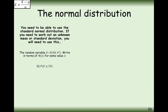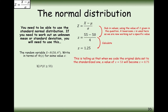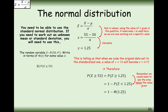Let's have a go at another one. The random variable x has a mean of 50 and standard deviation of 4. Write in terms of phi of z for some value of z the probability of x being bigger than 55. The x value we're working with is 55, so you put 55 in where x is. The mean is 50, standard deviation is 4, so you work out that your z value is 1.25. We're going to have to do 1 minus phi of 1.25, and that's the answer to this question.